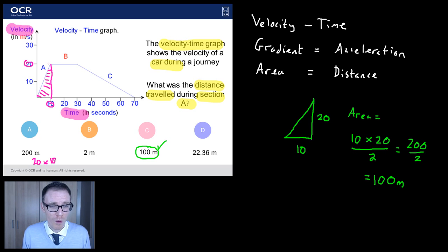Sure, that technique might work when we've got section B, which is going to be rectangular. But whatever shape we're dealing with, we've got to respect how to work out the area of that shape. So if it's a triangle, 20 times 10 divided by 2.